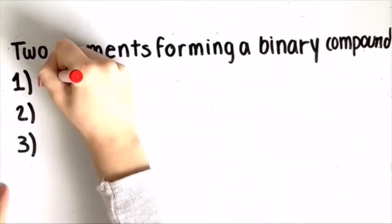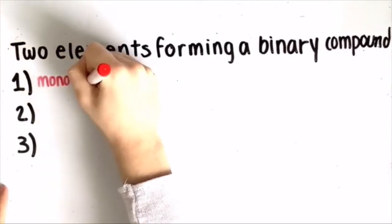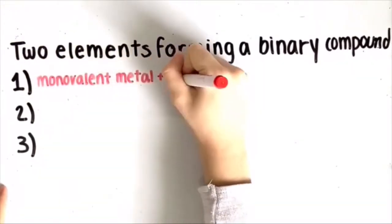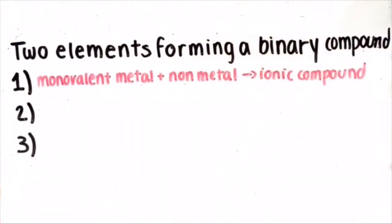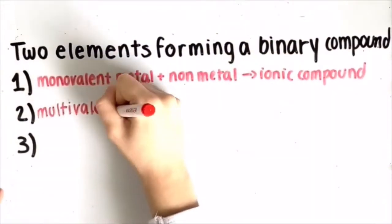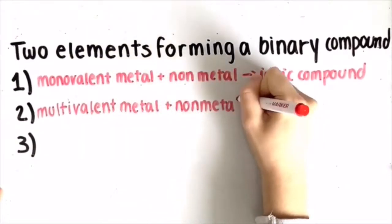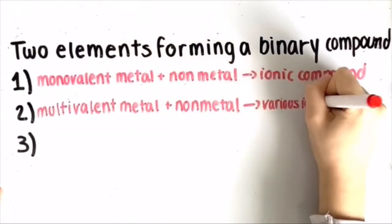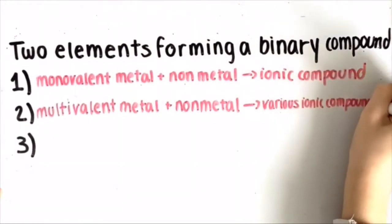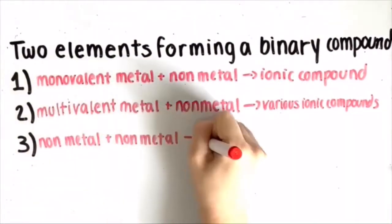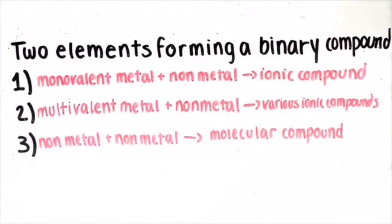There are three different ways that two elements can form a binary compound. A monovalent metal reacts with a non-metal to form an ionic compound. A multivalent metal reacts with a non-metal to form various ionic compounds. And two non-metals combine to form a molecular compound.